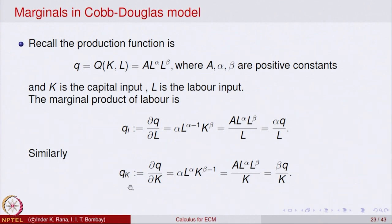Similarly, the marginal with respect to K is the partial derivative of Q with respect to K. That gives A · L^α · β · K^(β−1). Multiplying and dividing by K and using the original equation, we get β·Q / K. So we can represent both marginals in terms of the original production function.